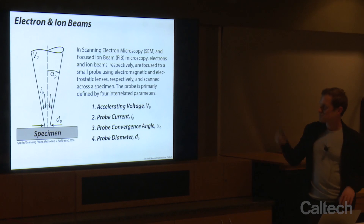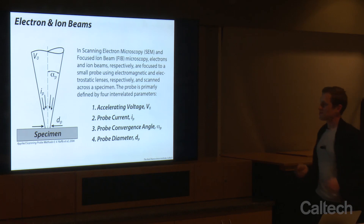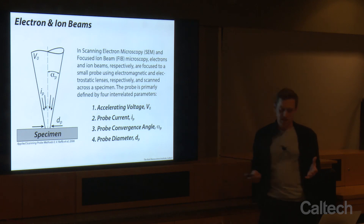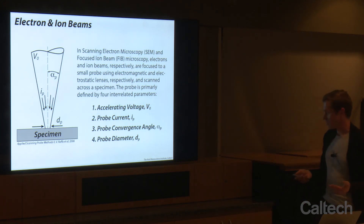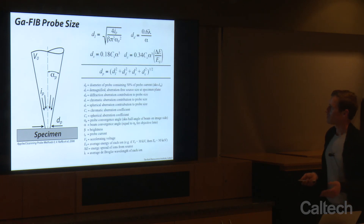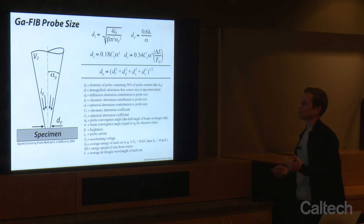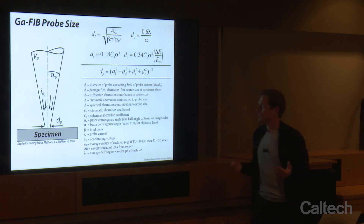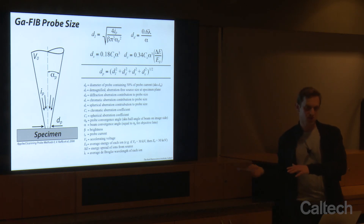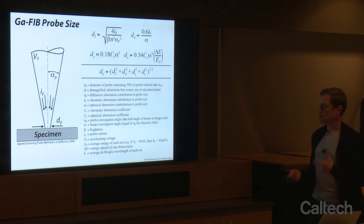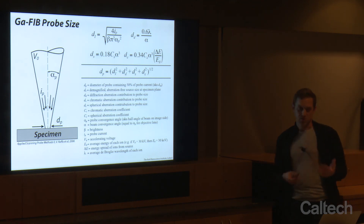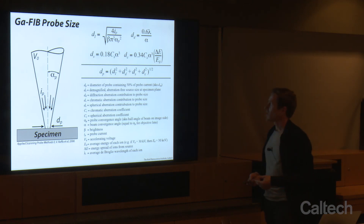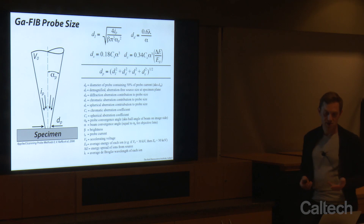This is true for both electron beams and ion beams: the main parameters are the accelerating voltage, the probe current, and the probe convergence angle. These come together to give us a probe diameter for our beam. We can look at the relevant equations for the gallium-focused ion beam and all the definitions. As we do our microscopy, we don't typically make a lot of these calculations, but it's good to know these equations exist to understand why we're getting certain probe sizes and how they relate to aberrations and the main parameters — voltage, current, and convergence angle.